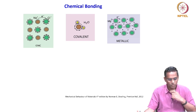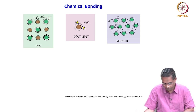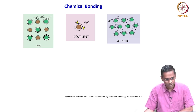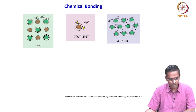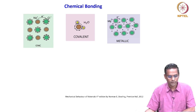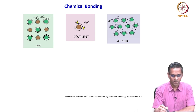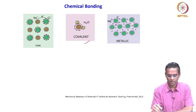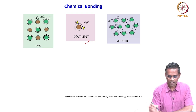Let us now review what chemical bonding is. All of us know that there are primary chemical bonds and secondary chemical bonds. What we are seeing here is ionic sodium and chloride ions, which exhibit ionic bonding. The second one is a water molecule, which exhibits covalent bonding. And the third is magnesium metal, exhibiting a metallic bond.